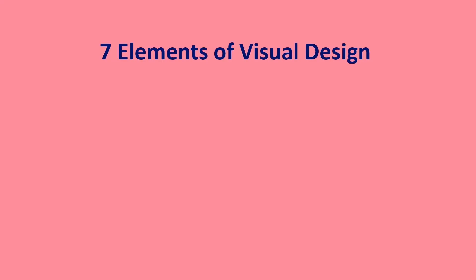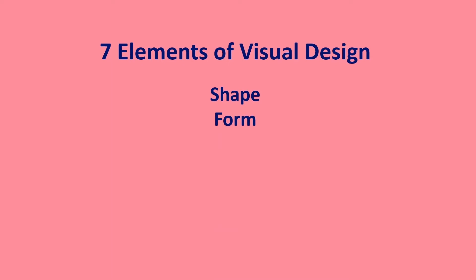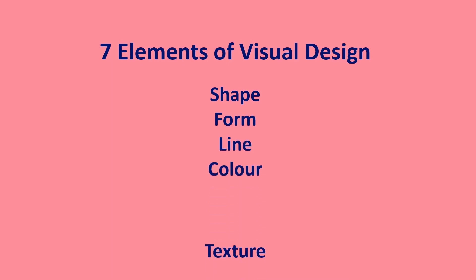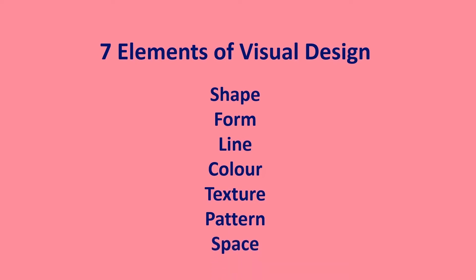So there we have seven elements of visual design: shape, form, line, colour, texture, pattern, and space. Seven things to remember. Do you think you can do it? I think you can.